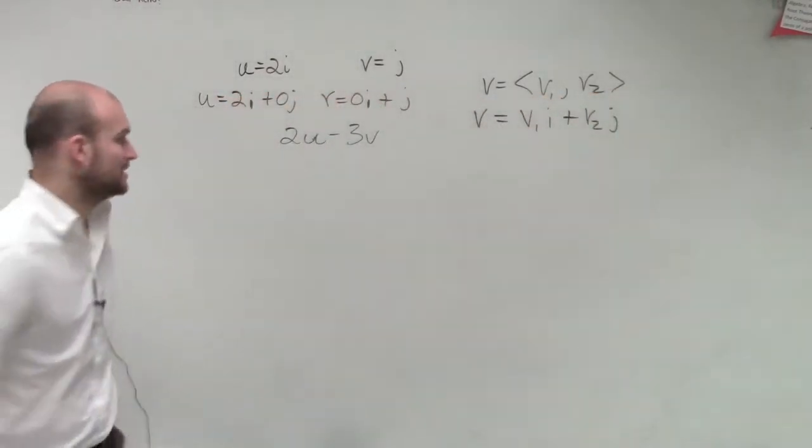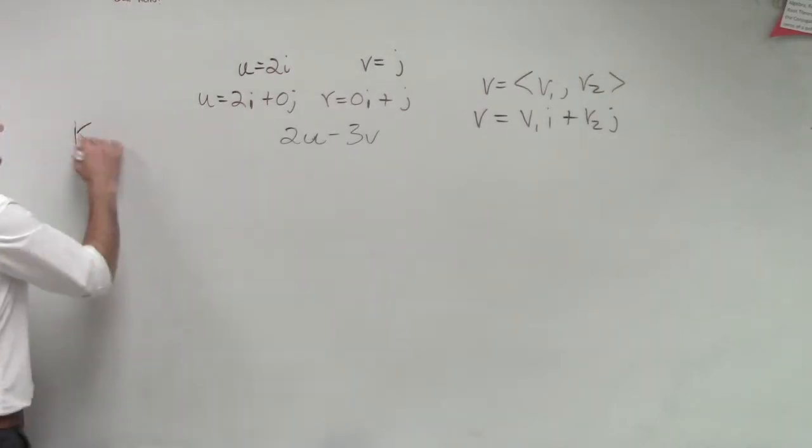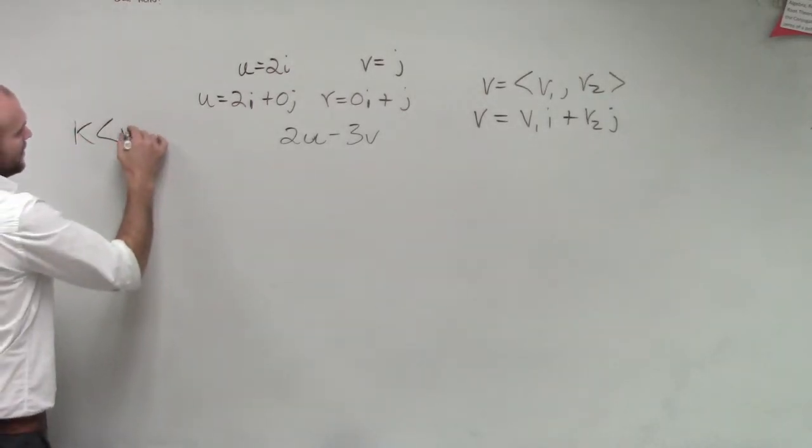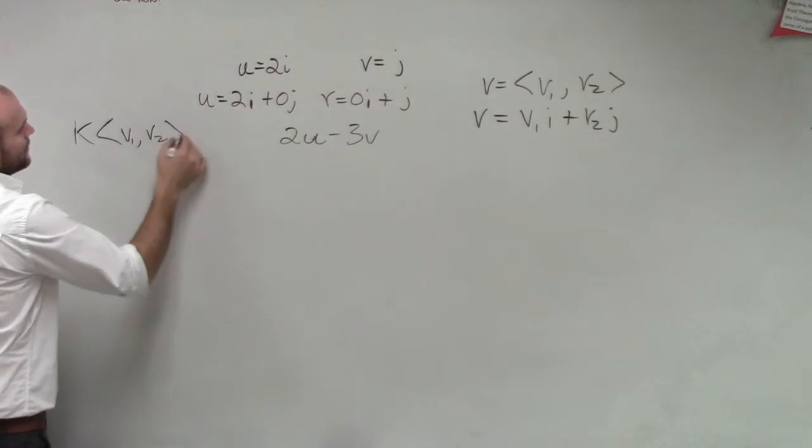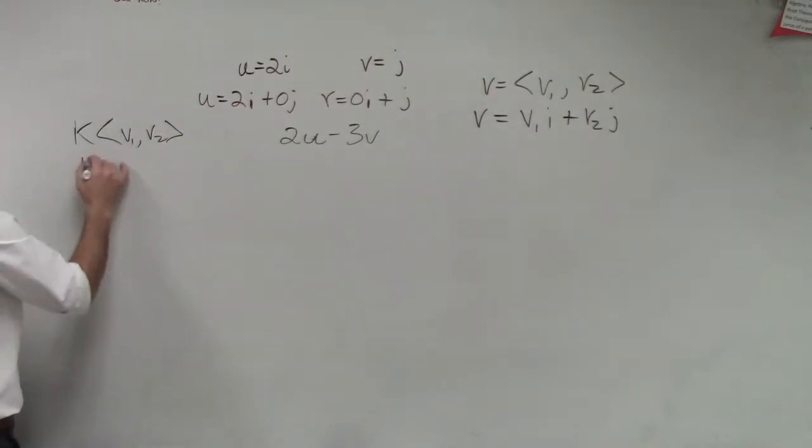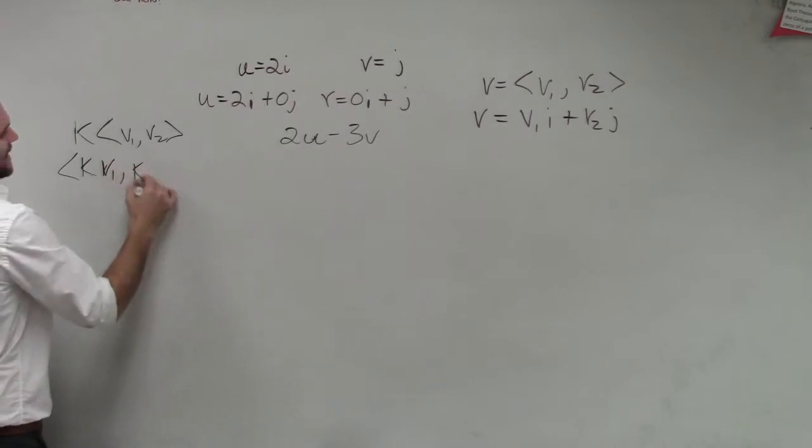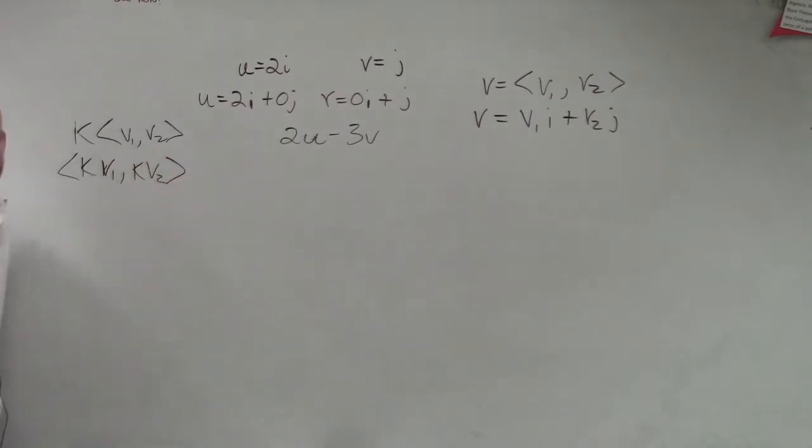So remember, when dealing with the scalar, in particular k, over v1 comma v2, that scalar was going to do k v1 comma k v2, right? You guys remember scalars? Scalar multiplies all the way through.